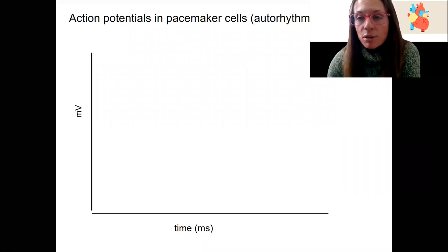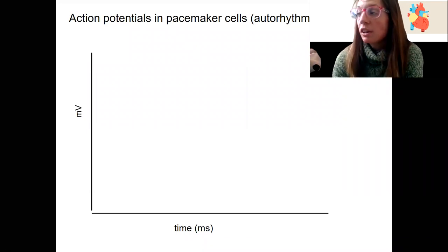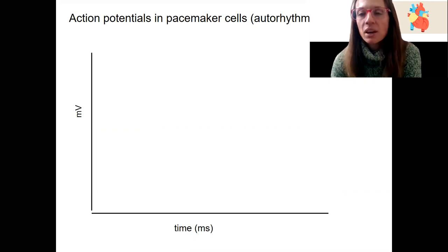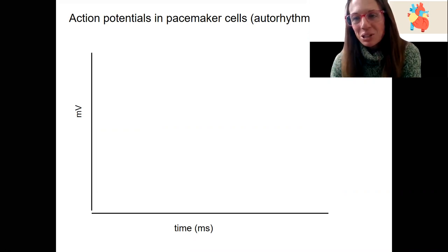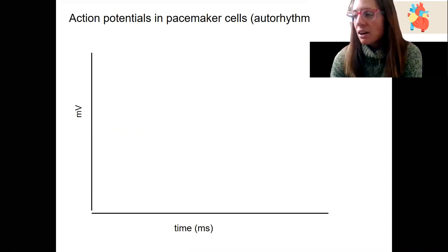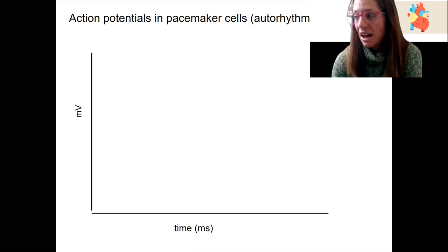The pacemaker cells are autorhythmic. They're the ones that are going to help our heart spontaneously beat and allow the heart to contract without any external input. There is external input that we'll get to that regulates this, but you don't need it for the heart just to keep beating. And there are special receptors — gated channels in the heart — that allow this to happen.